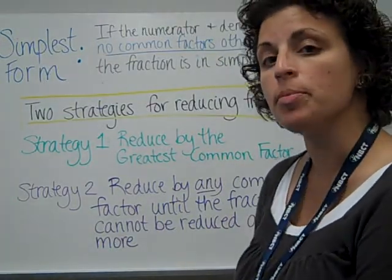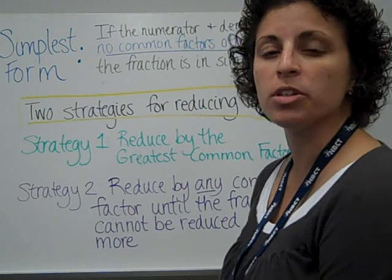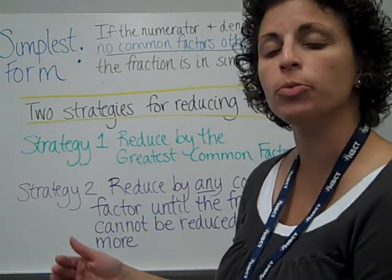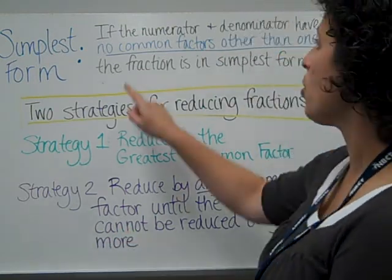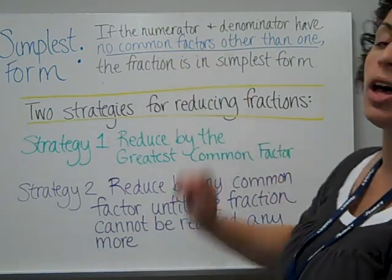Reducing a fraction to its simplest form means that we are going to divide the parts of the fraction, the numerator and the denominator, until they have no common factor other than one.